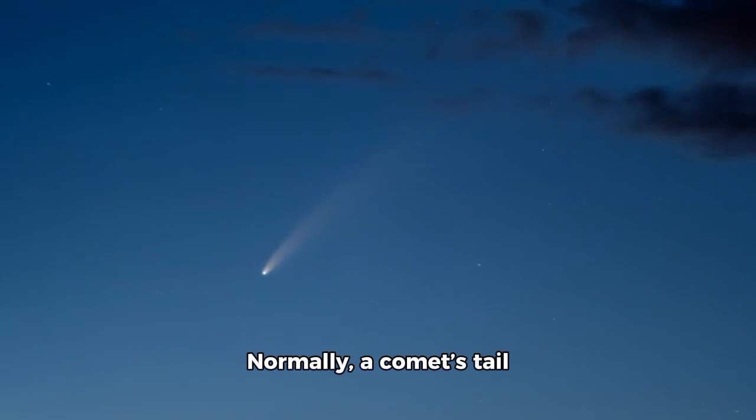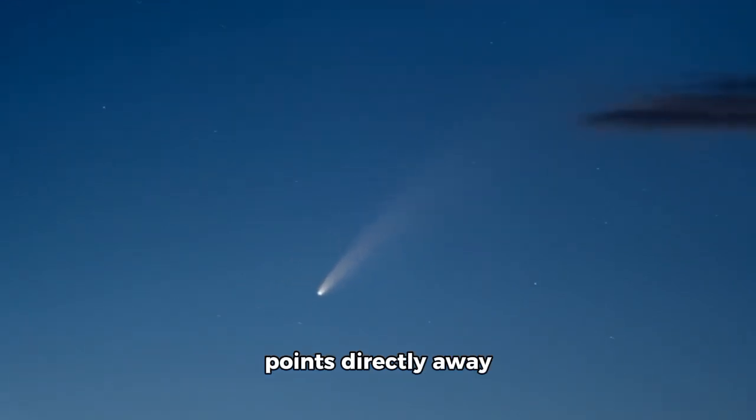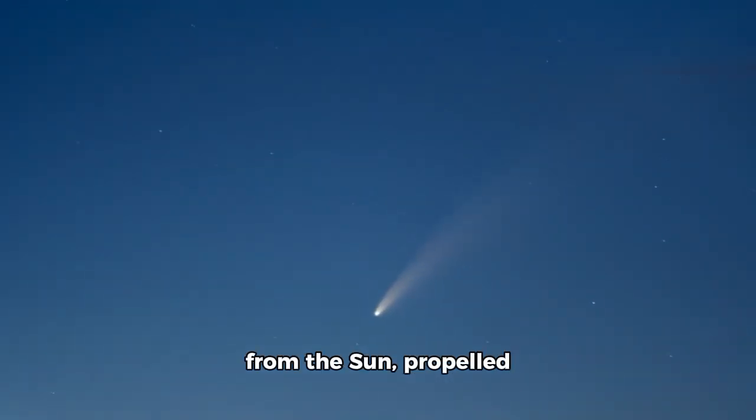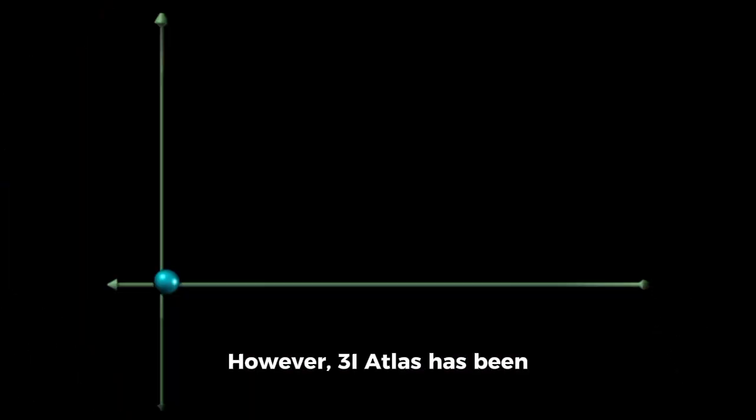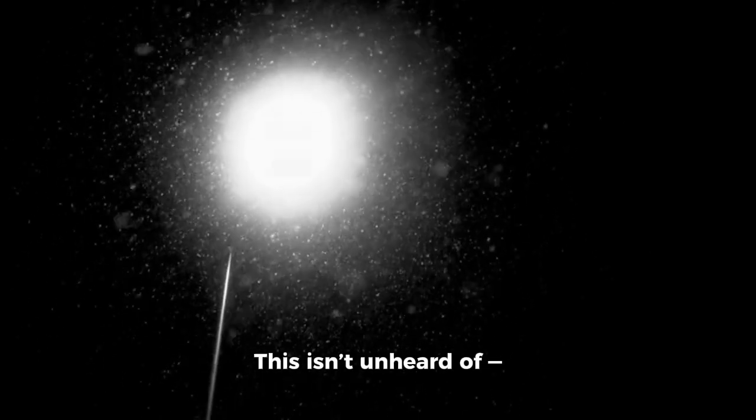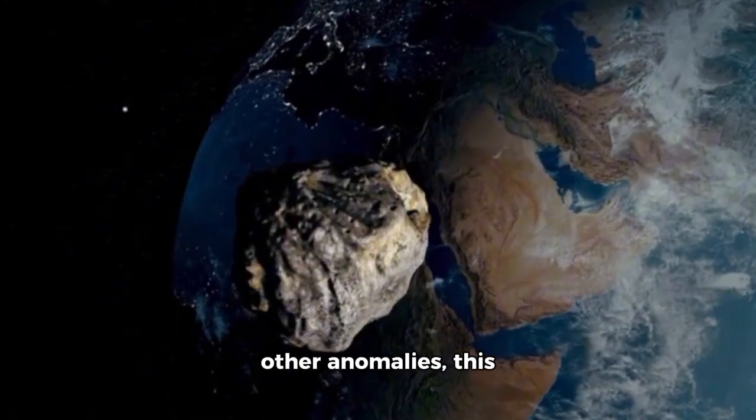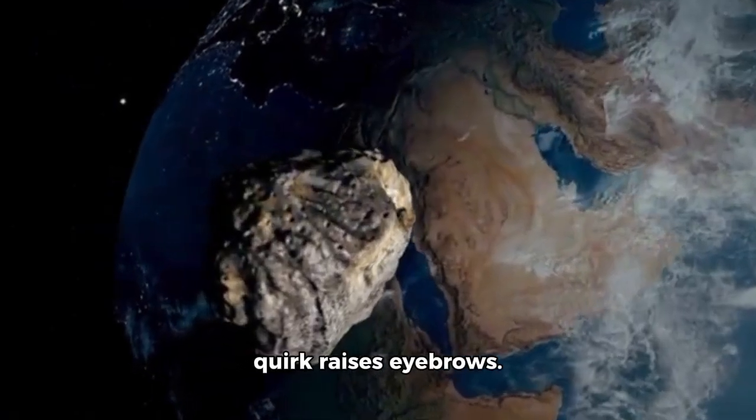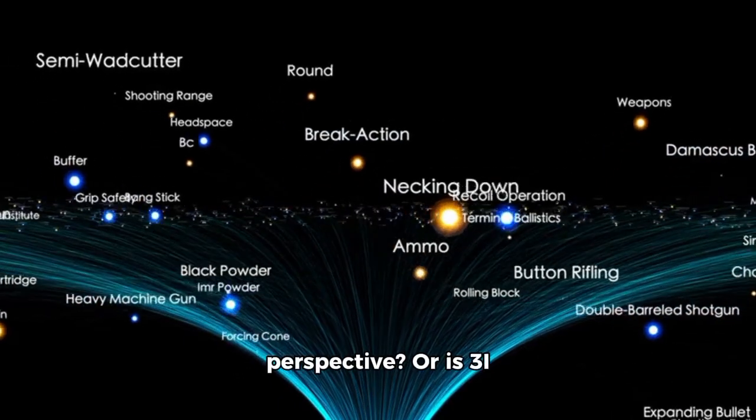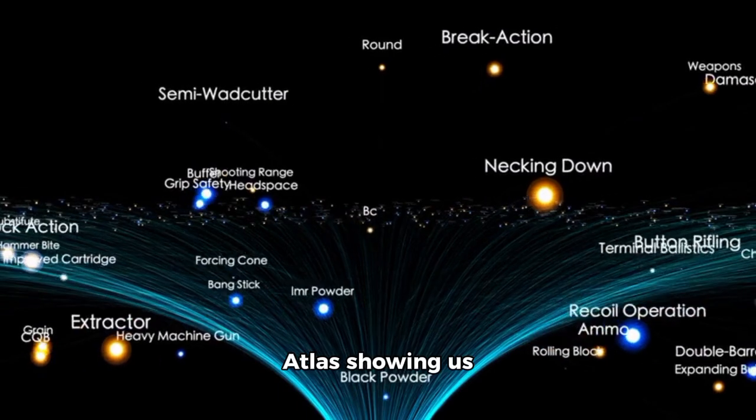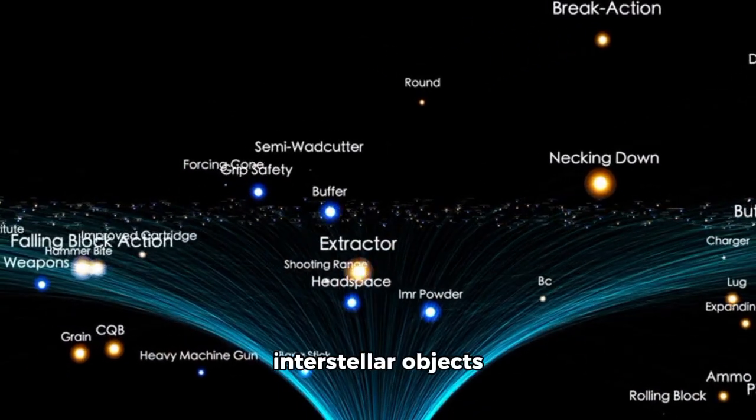Then there's the tail. Normally, a comet's tail points directly away from the sun, propelled by solar wind and radiation pressure. However, 3i Atlas has been observed with a tail that at times seems to curve toward the sun. This isn't unheard of - some comets produce dust trails of heavier particles that lag behind, creating unusual visual effects. But combined with its other anomalies, this quirk raises eyebrows.